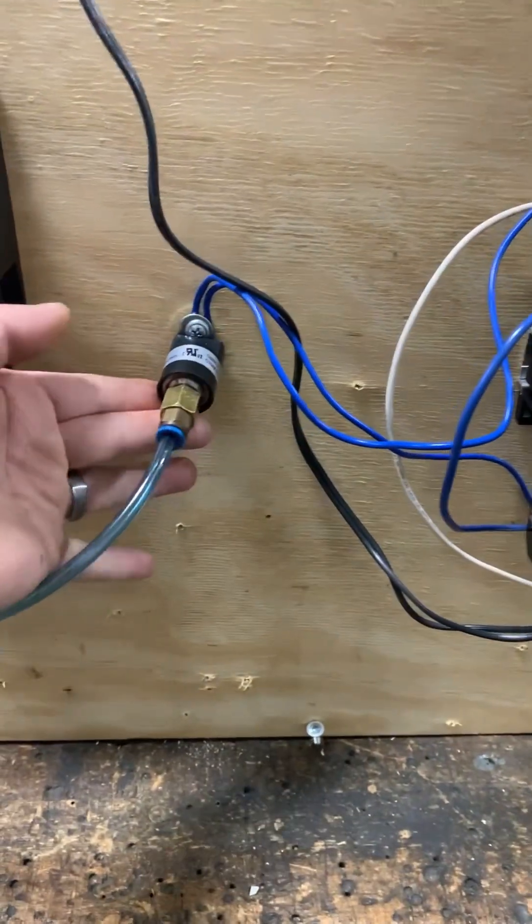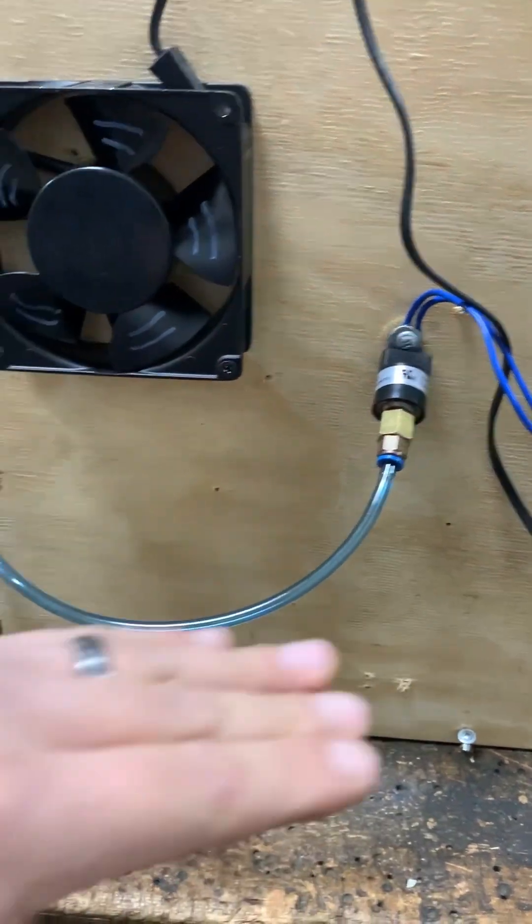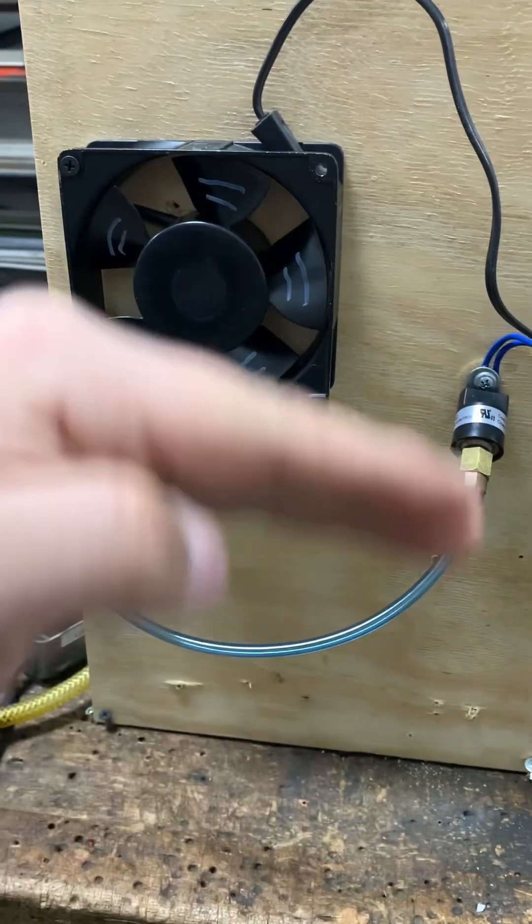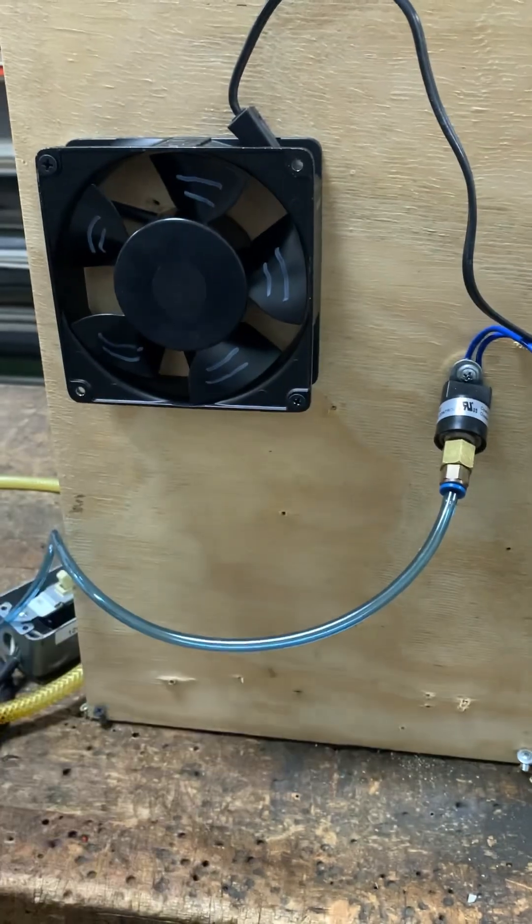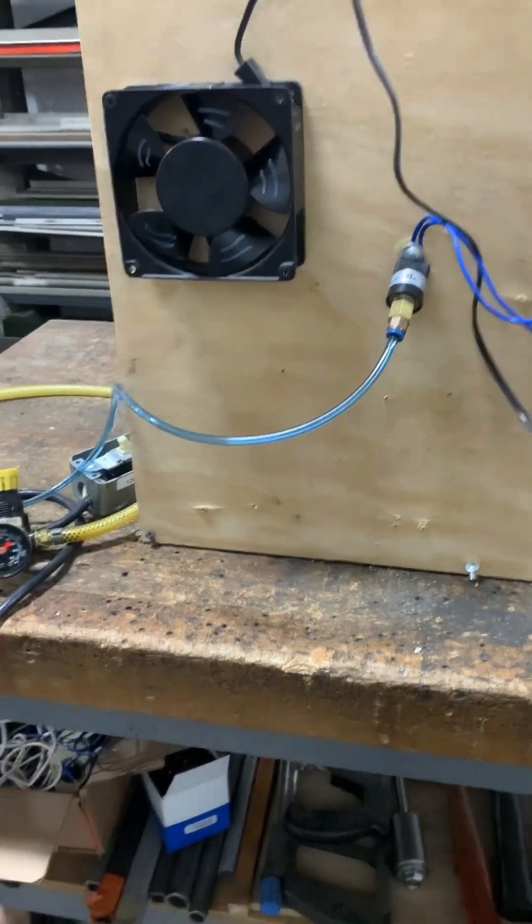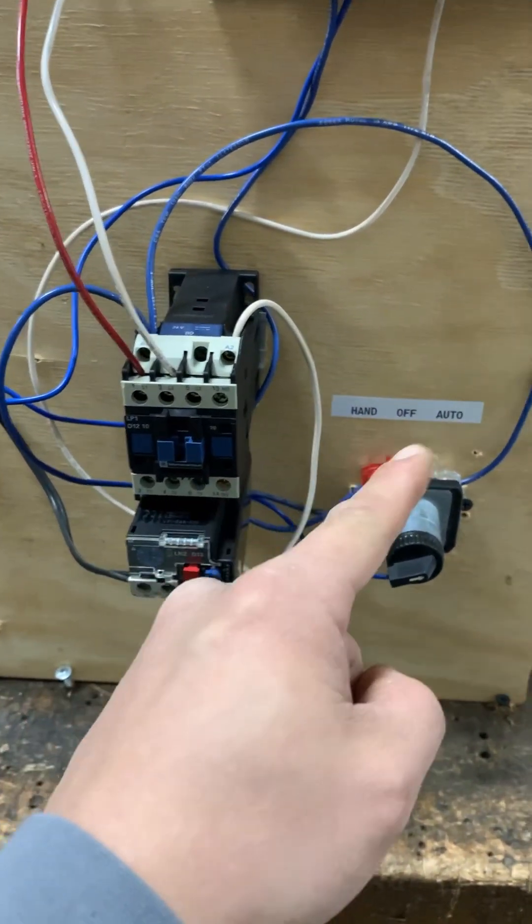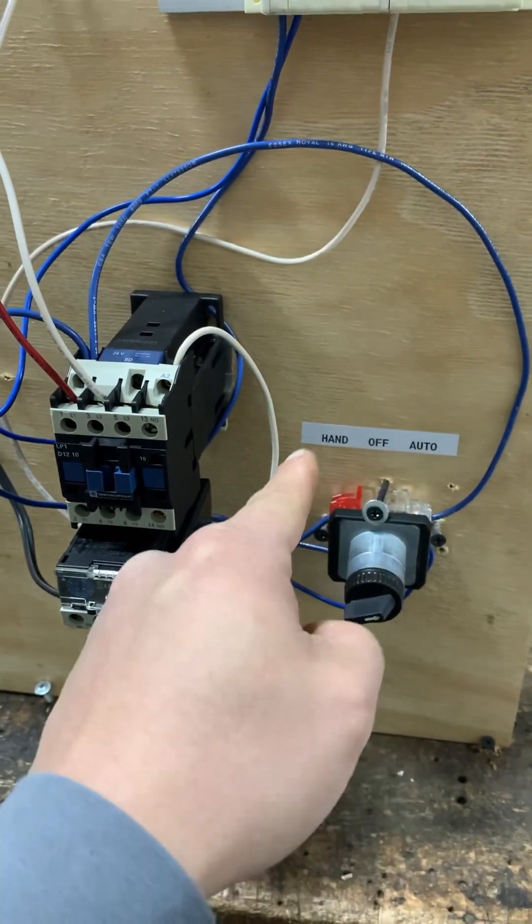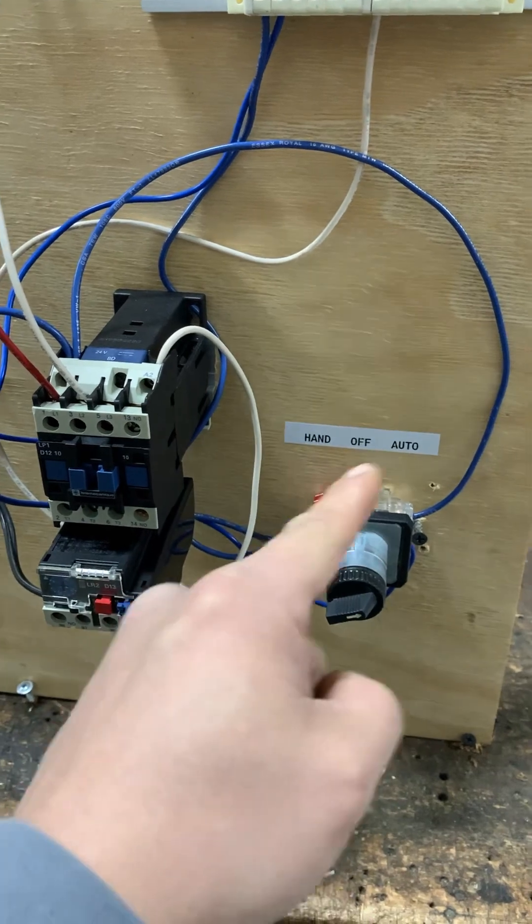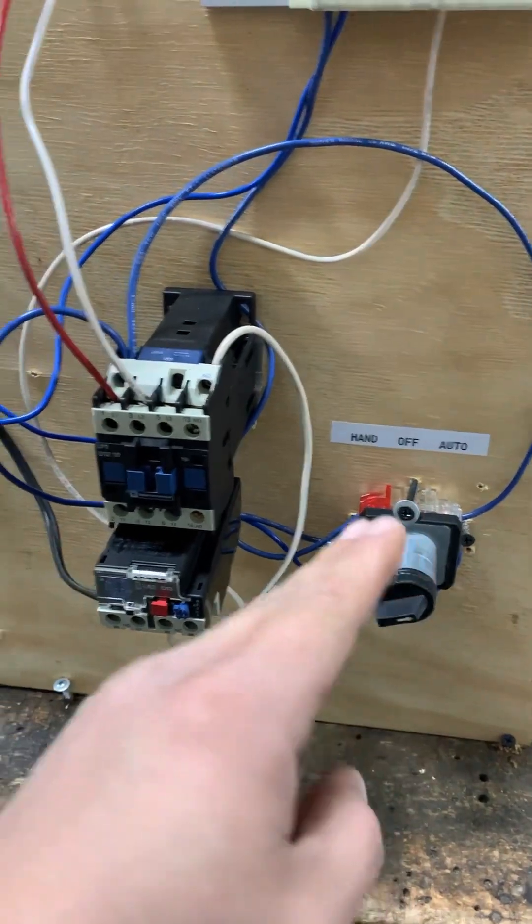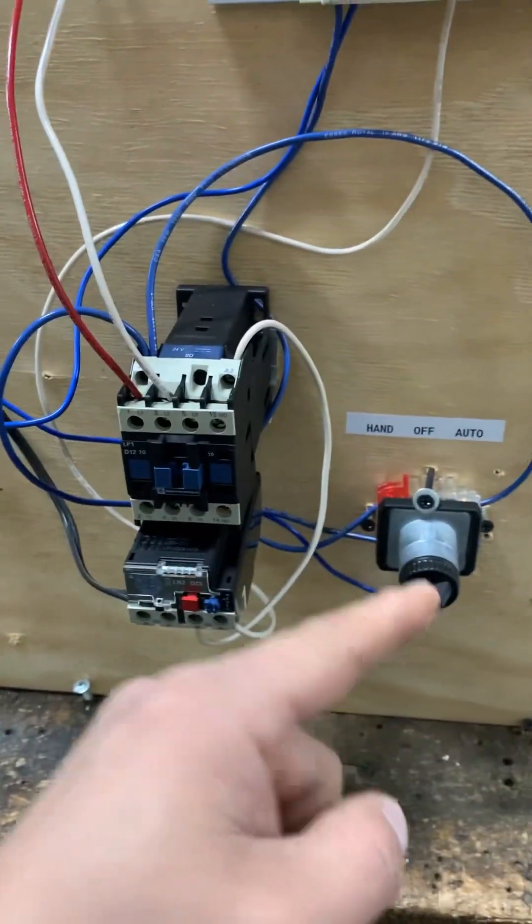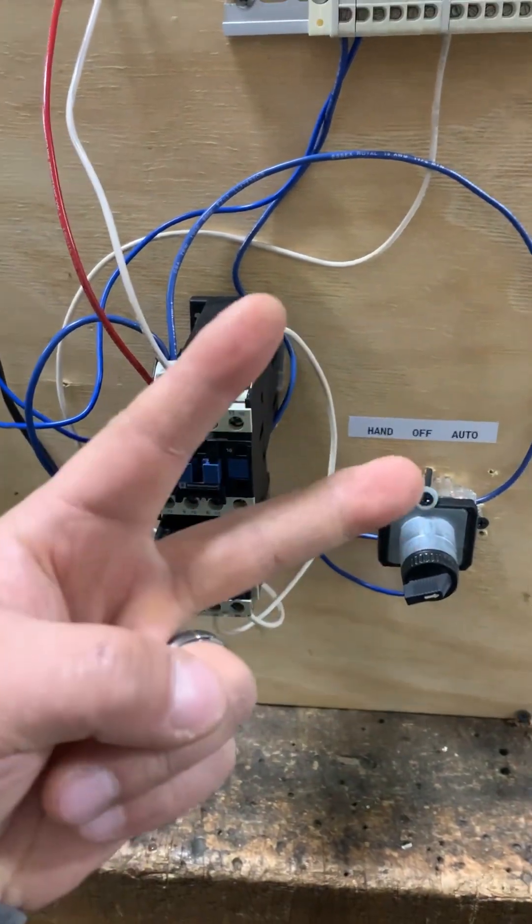And that is how you automate it on the auto side. You need some sort of switch to detect something and it will automatically turn on, turn off, repetitively over and over again. And that is how an HOA or hand off auto - hand just means manual, off and auto - that's how this system works in its most basic and simplest form. Until next time. Deuces.